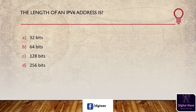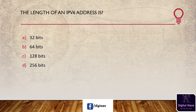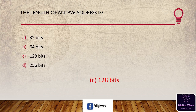Next question: the length of an IPv6 address is — options are: 32 bit, 64 bit, 128 bit, 256 bits. The answer is C, 128 bits. An IPv6 address is 128 bits long, which provides 2^128 address space.